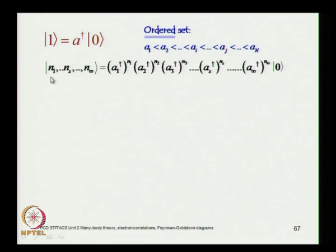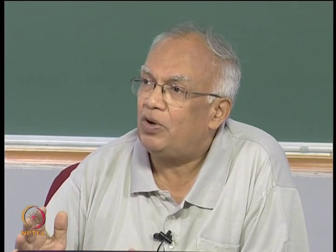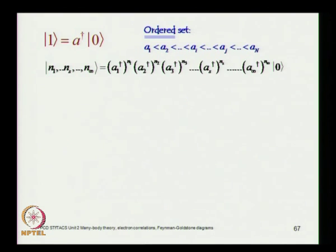The occupation number vectors can be written as a result of creation operators for each occupied state operating on the vacuum. Because of completeness, all infinite single-particle states are needed; only those corresponding to occupied states contribute — others have occupation 0. This is your fermion occupation number state.